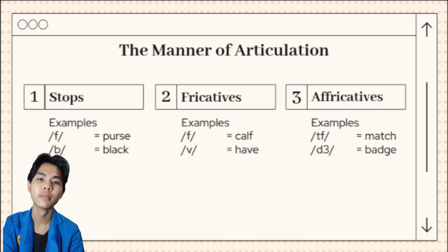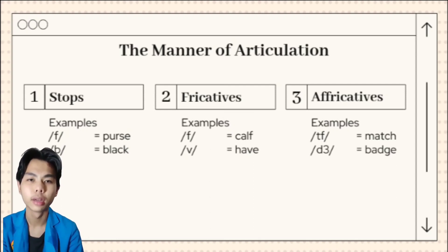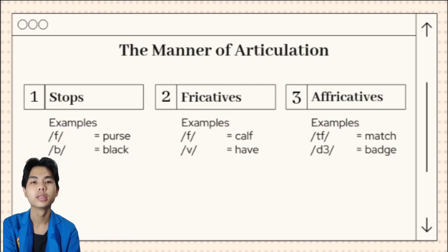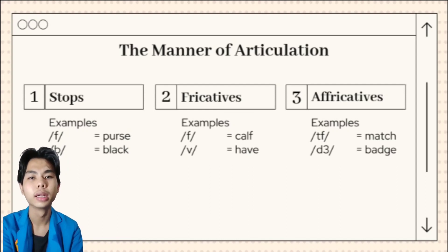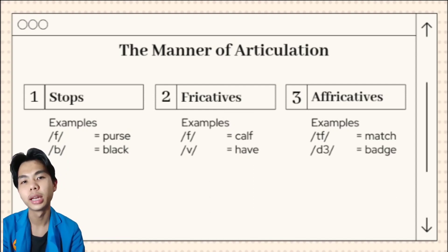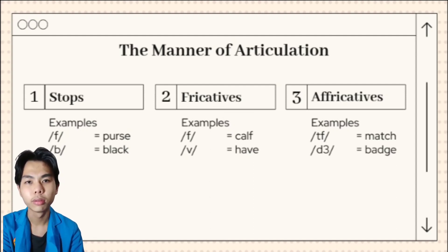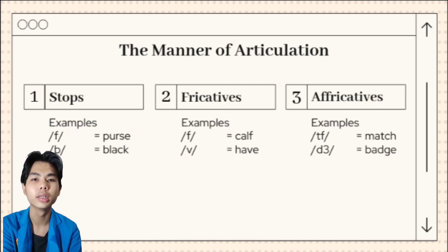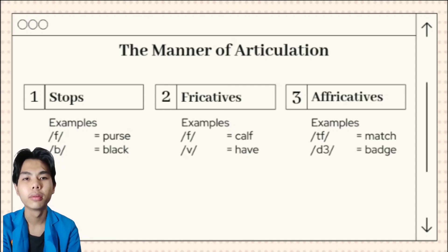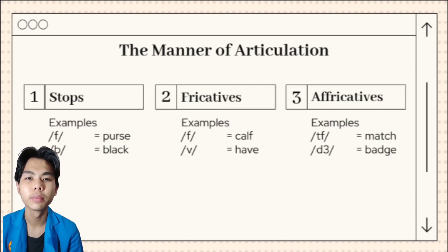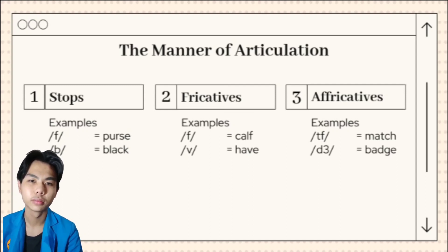Manner of articulation — what is manner of articulation? In articulatory phonetics, the manner of articulation is the configuration and the direction of the articulators when making a speech sound. One parameter of articulation is how closely the speech organs approach one another. The manner of articulation is the way the air stream is affected as it flows from the lungs and out the nose and mouth.